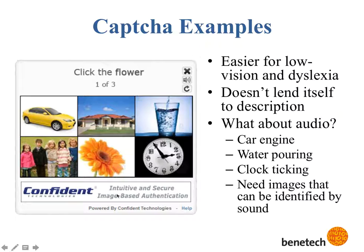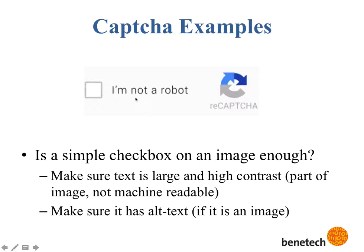People have tried to make CAPTCHAs easier by using pictures — for example, picking out which one is a flower. But this doesn't lend itself well to description. What if you used audio sounds like a car engine, water pouring, or a clock ticking? Some picture CAPTCHAs also have an audio CAPTCHA option. But the question is: can we do something even simpler? Is it sufficient to just have a simple checkbox on an image? The text is part of the image, making it harder to be machine-readable, but to be accessible to the blind, it has to either have alt text or an accompanying audio CAPTCHA. I would argue that the simpler you can make them while still not being readable by automated scripts, the better.